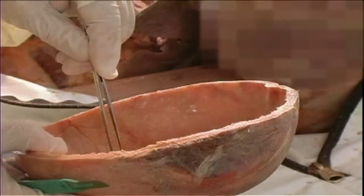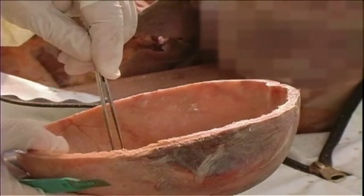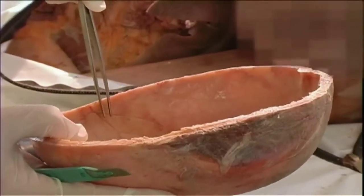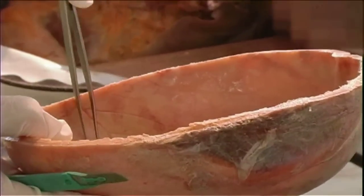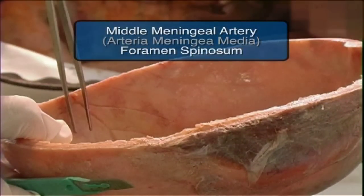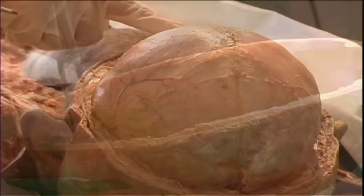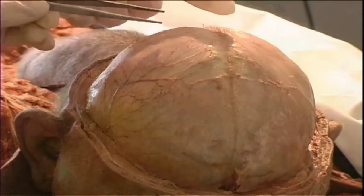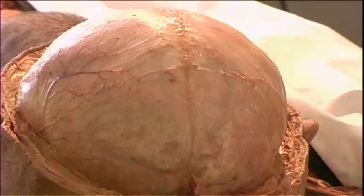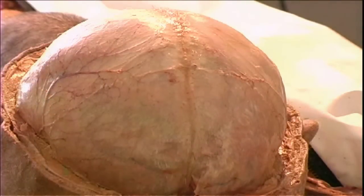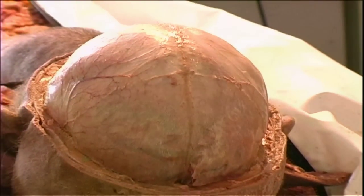We can see here the inner layer of the bone, and here we can see the imprints made by the middle meningeal artery inside the cranial bone. This is the meningeal layer of the dura mater, in which the large venous sinus is located.